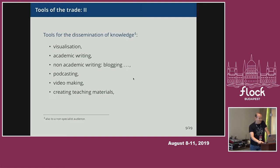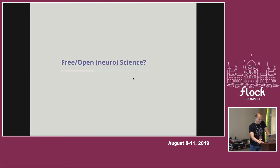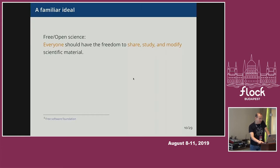I think this would be familiar for everyone at a Fedora Flock conference — everyone should have freedom to share, study, and modify scientific material. And you don't need a PhD to be a scientist. You don't have to publish in Nature or Science to be a scientist, but you do need the tools and the scientific method — that's basically the requirement of being a scientist.